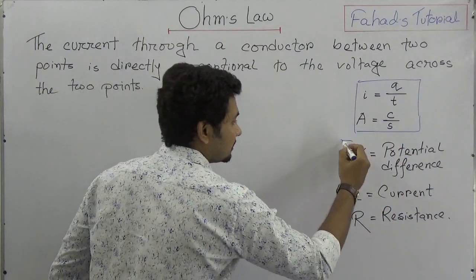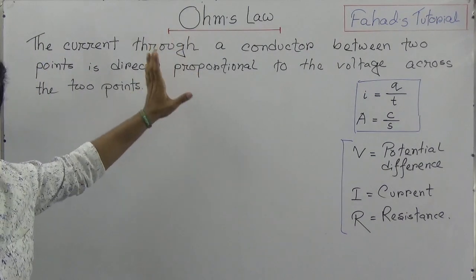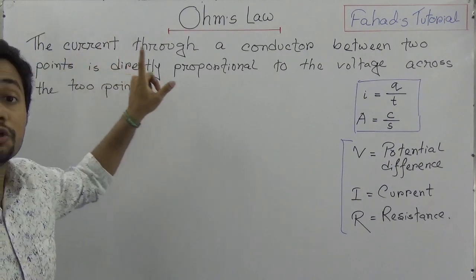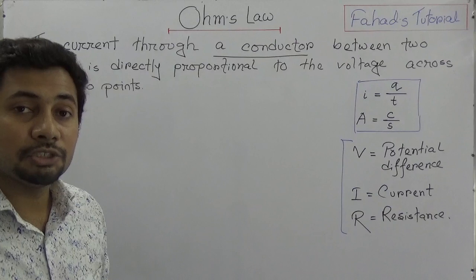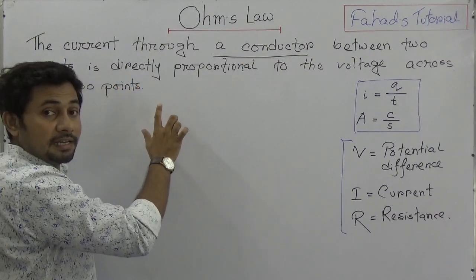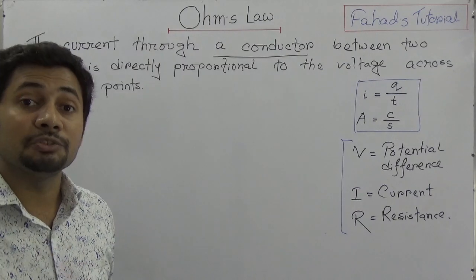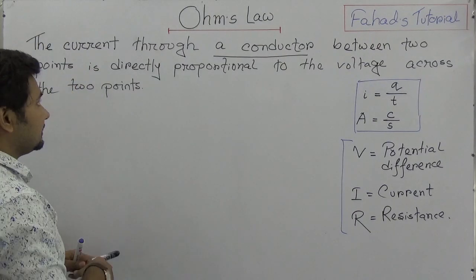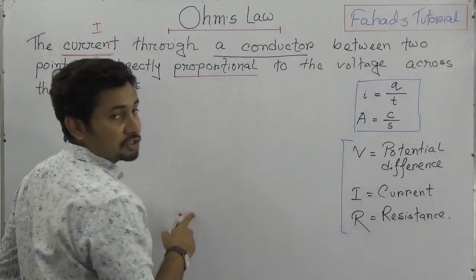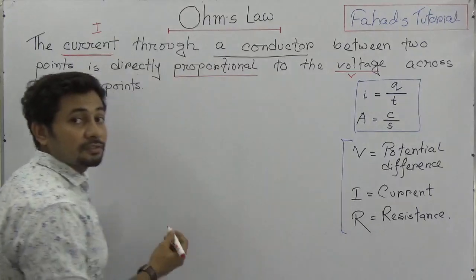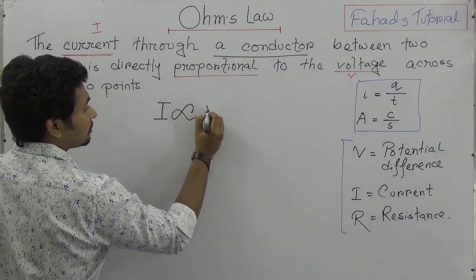Now let's talk about the statement of Ohm's Law. Ohm's Law states that the current through a conductor between two points is directly proportional to the voltage across those two points. That means I is directly proportional to V.